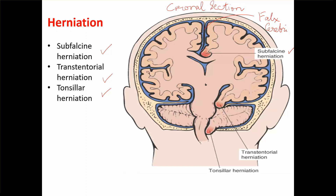In subfalcine herniation, the part of the medial surface of the cerebrum involved is the cingulate gyrus, and the artery that may be compressed is the anterior cerebral artery. You need to correlate this with the previous anatomical diagram.